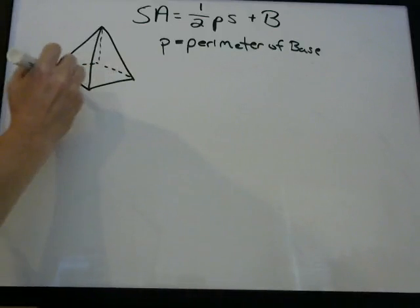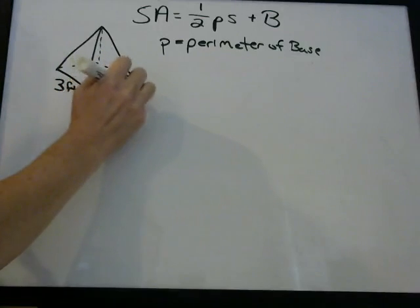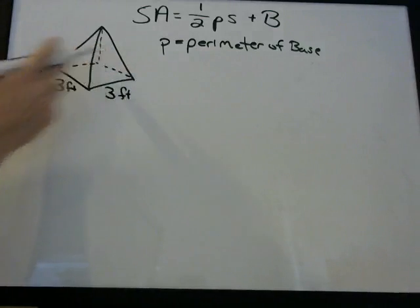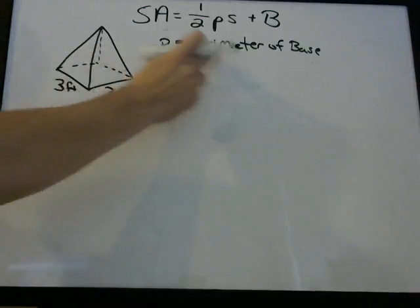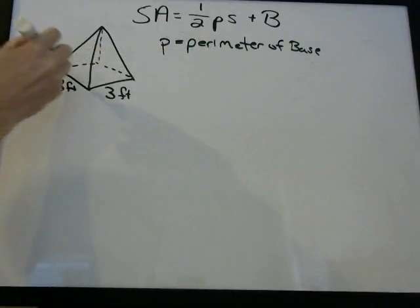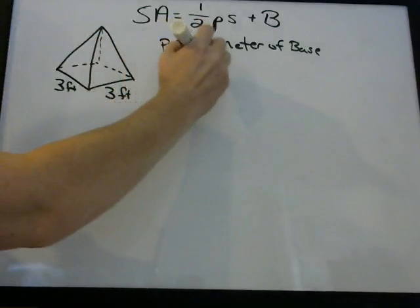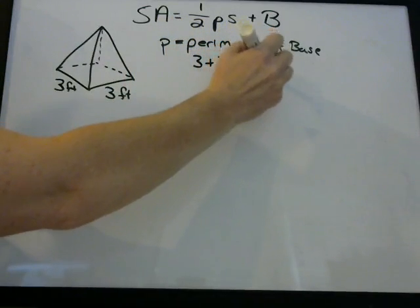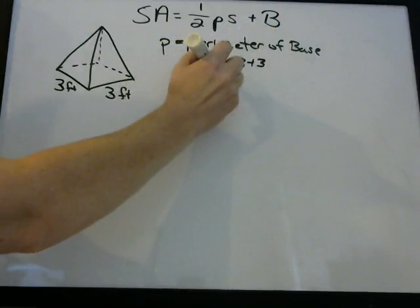Let's say each of the sides is three feet — the back two sides are three feet as well. The perimeter of the base is found by adding up the sides, because it's like you're trying to put something around this — so it's three plus three plus three plus three.